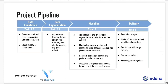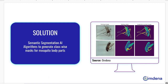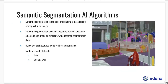As a part of the project pipeline, we mainly had the tasks of data annotation, data augmentation, and modeling. The solution to this problem is to develop semantic segmentation AI algorithms to generate class-wise masks for the mosquito body. Out of these algorithms, the U-Net and Mask RCNN gave the best accuracy on our mosquito dataset.